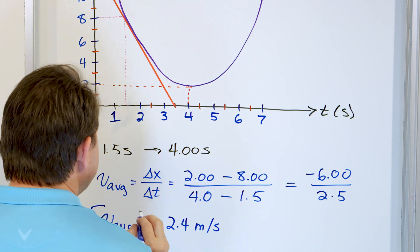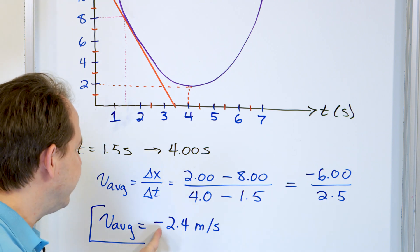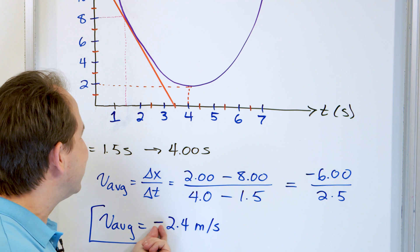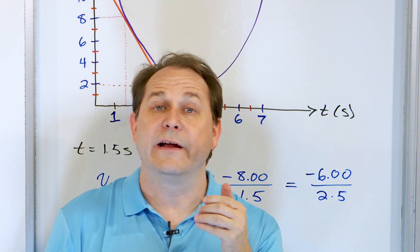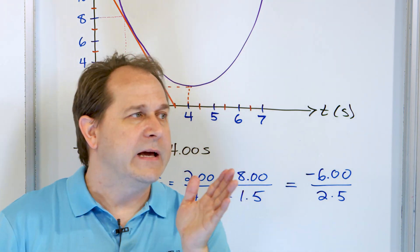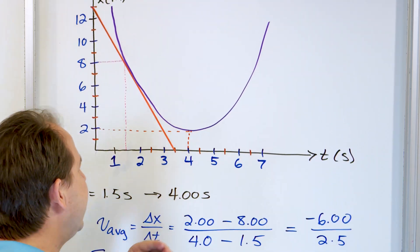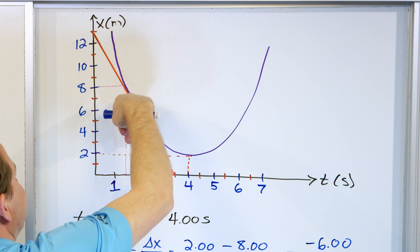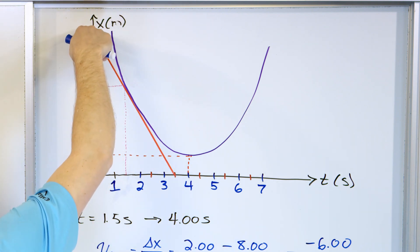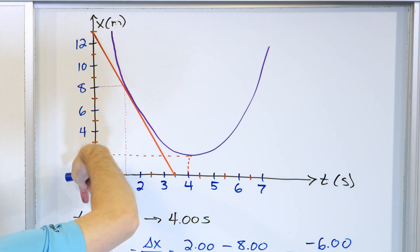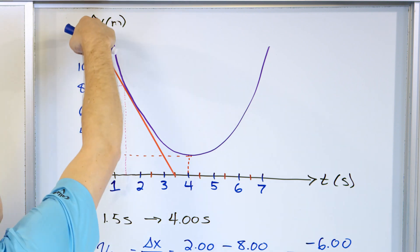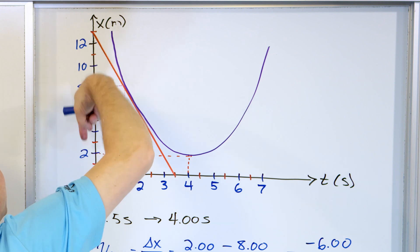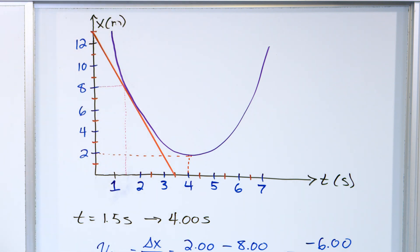The sign means something too. The speed is 2.4 meters per second as an average, but the negative sign means we're traveling toward the origin — or rather, in the negative x direction. We're starting far away and coming back. Big values of x are here, the origin is here, and we're heading toward negative values of x. That's why we get a negative answer.